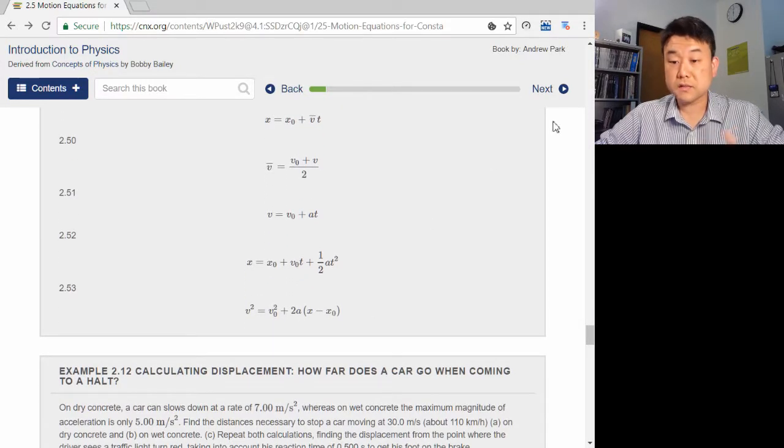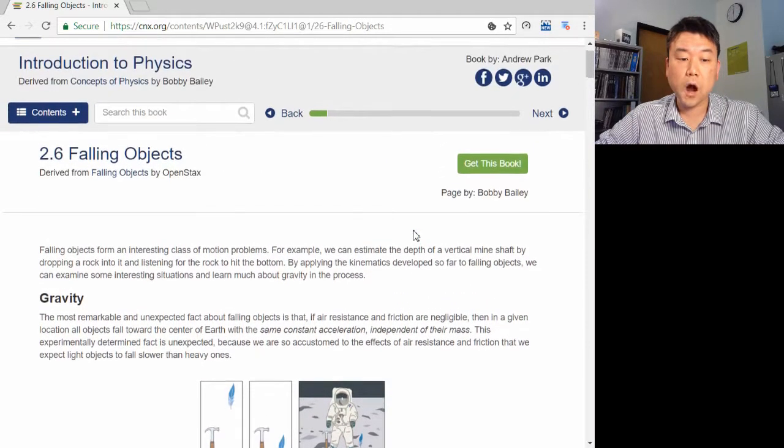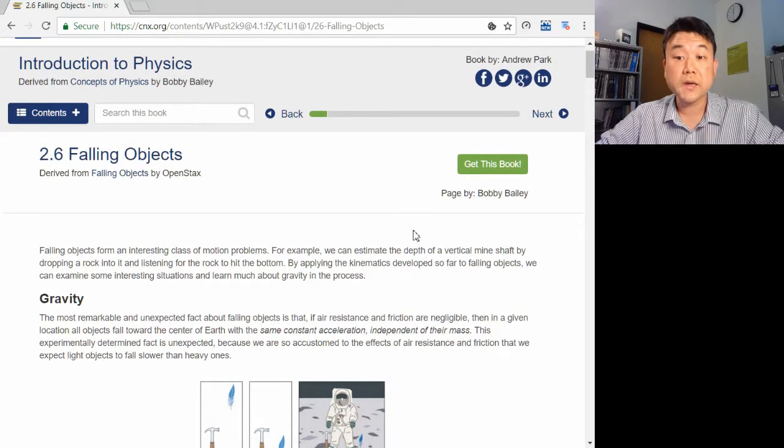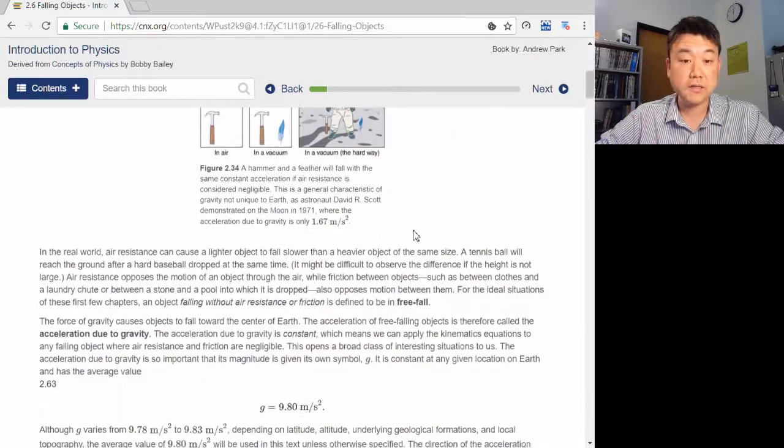And in section 2.6, the example of objects falling under gravity is used to illustrate motion in one dimension with a constant acceleration.